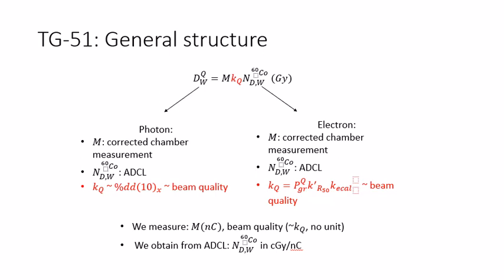Now let's take a look back at TG51 general formalism. We have discussed how to correct for the chamber raw reading, which is the corrected reading M. We know that NDW cobalt-60 is a factor that comes directly from the calibration lab, which we don't need to do any measurement for in the TG51 annual test. So what's left is the KQ factor, the beam quality factor.